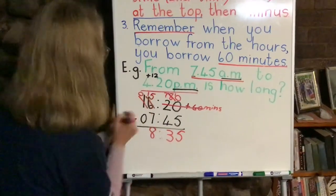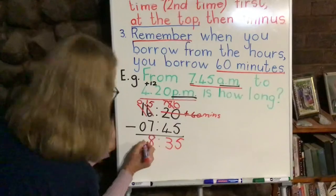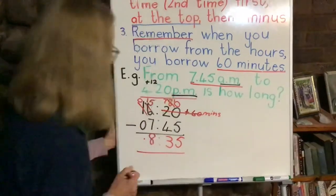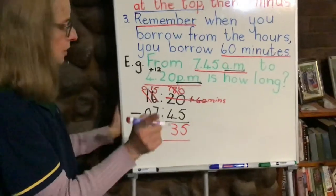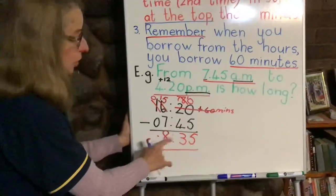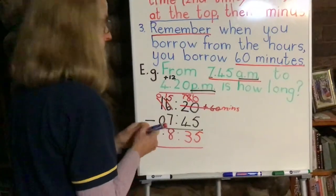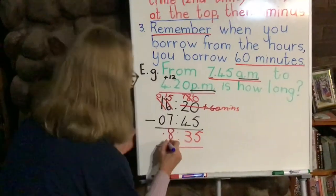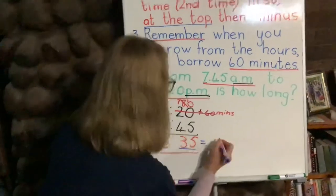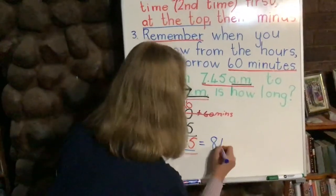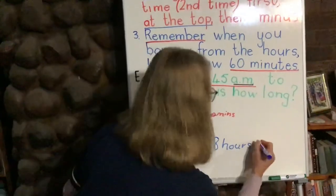Can I take 7 away from 5? No — I have to borrow from the 10 and give that over to the units here, so it becomes 15 minus 7, which is 8. That becomes a 0, and 0 minus 0 is still 0. So we've got 8:35. But we cannot leave it as 8:35 because it looks like a time — it is in fact hours and minutes. So we always must write it properly at the end: 8 hours and 35 minutes.